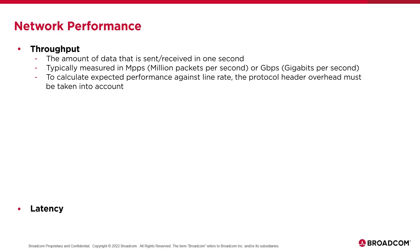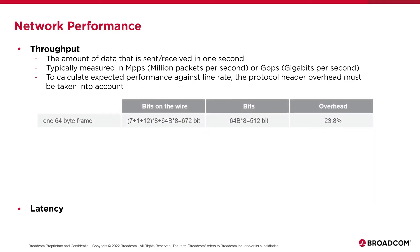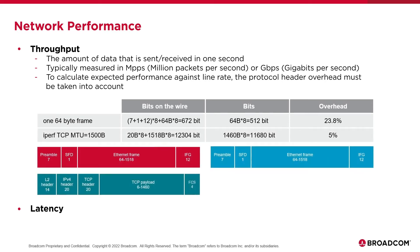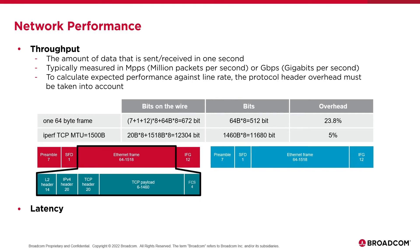To achieve line rate, you have to take into account the overhead of the TCP header itself. Here we have an example of using IPERF with TCP with the standard MTU of 1500 bytes, where the overhead works out to be about 5%. This comes into play when you're talking about throughput, especially in terms of gigabits per second, and the overhead will vary depending on which protocol you're using.